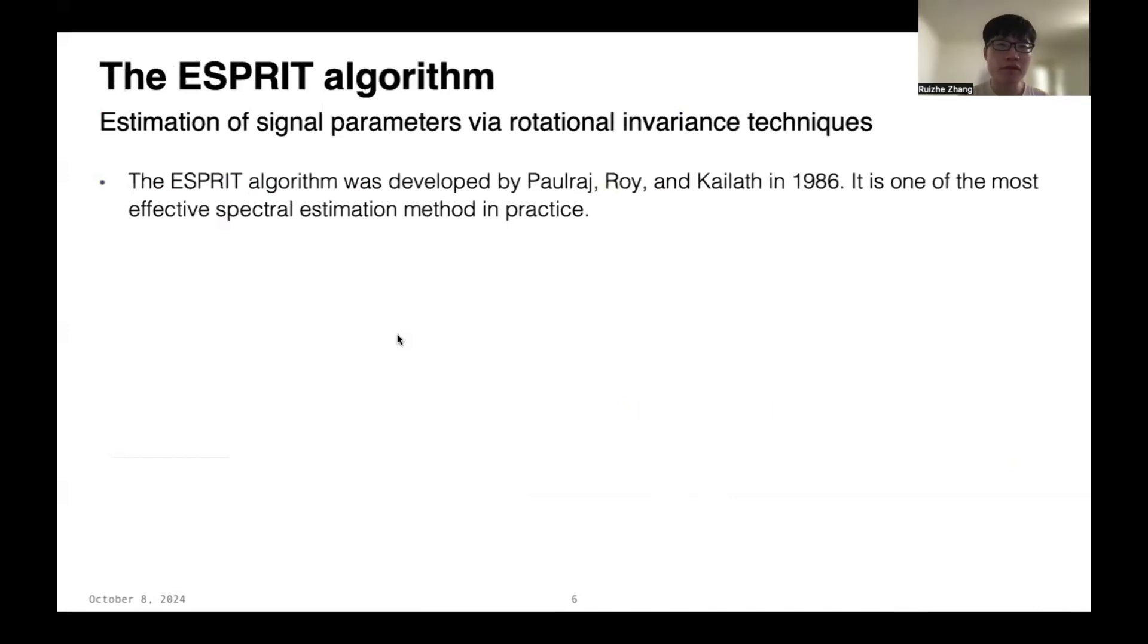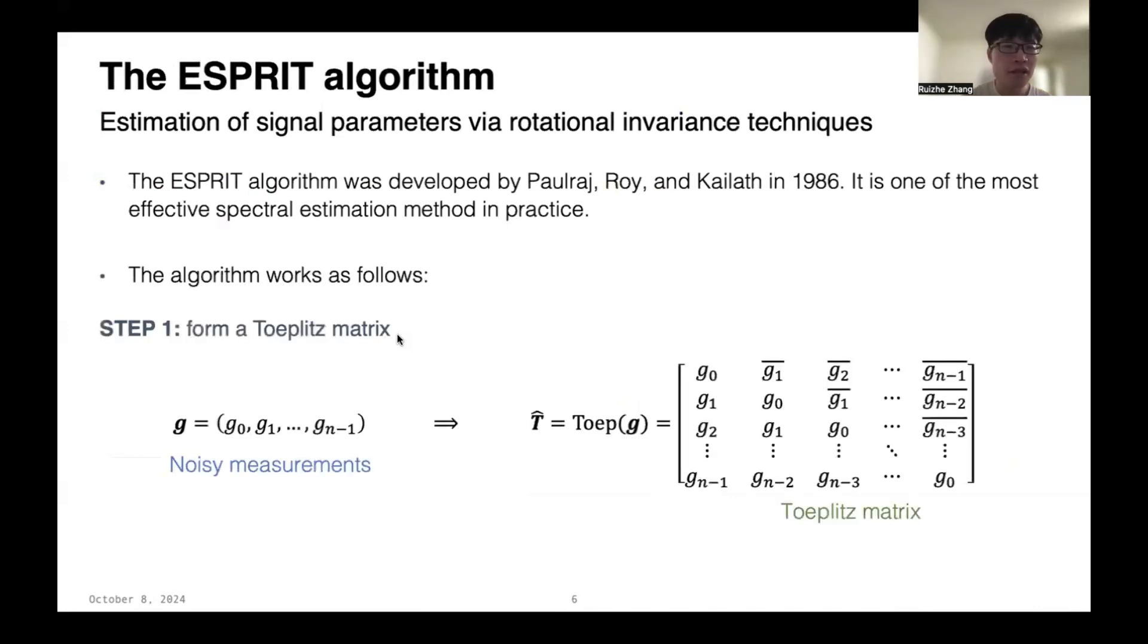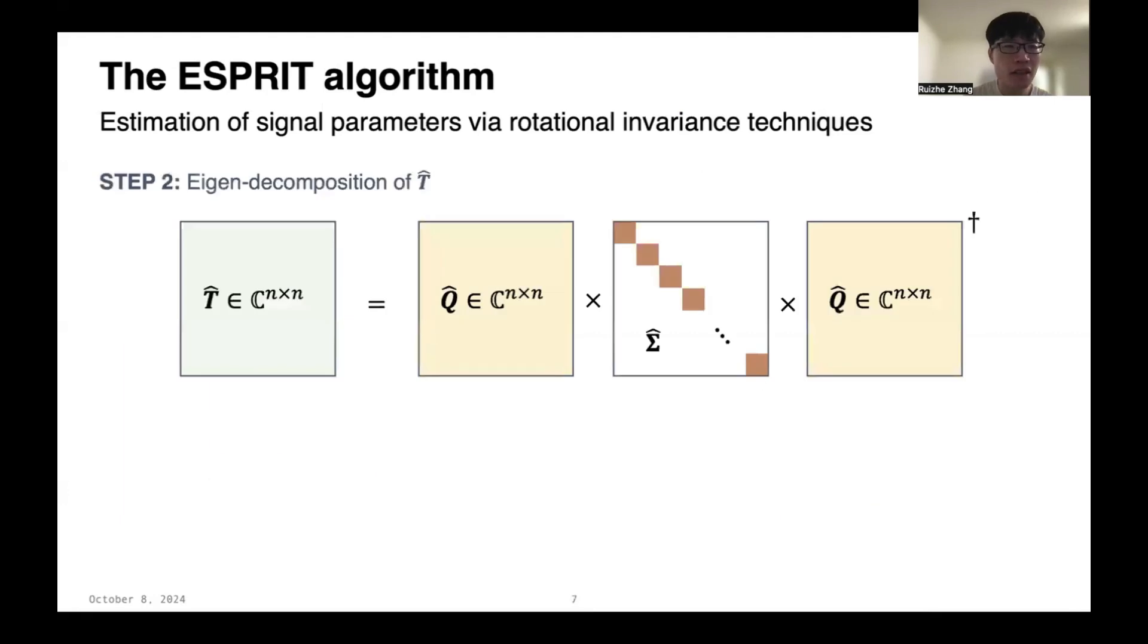So, what is the ESPRIT algorithm? It is very simple, works in the following four steps. First, it uses the noisy measurements G_0, G_1, to G_{n-1} to form a Toeplitz matrix, denoted by T̂. Then, it computes the eigen decomposition of T̂. Let's denote it as Q̂ times Σ̂ times Q̂ dagger.